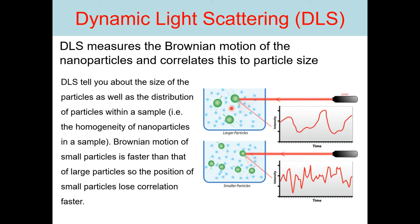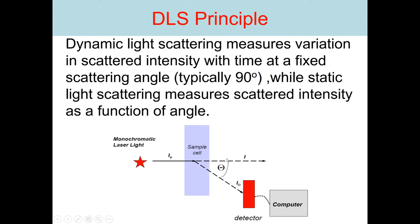We have Brownian motions of small particles, and the Brownian motion of smaller particles is faster than that of larger particles. The position of the smaller particle loses correlation faster. The principle of DLS is that it measures variation in scattering intensity with time at a fixed scattering angle, which is typically 90 degrees.